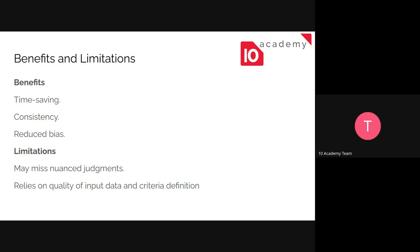Consistency and reducing bias go side by side - humans can be biased; it might depend on the energy or mood of that person on a given day. These things are not going to occur with AI. However, the limitations are that AI might miss nuanced judgments and some small details, and it relies on the quality of the data and the prompt you give it - so you have to give it a good prompt and good data for it to return a better screening.